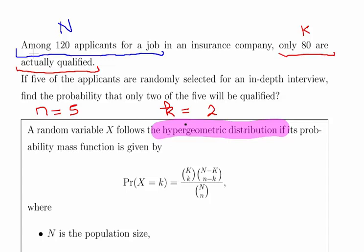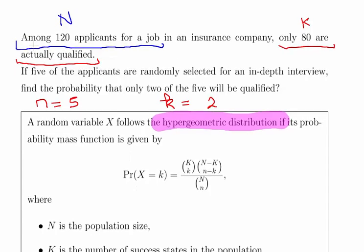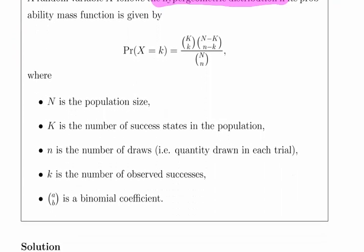This is the formula that we will be working with. These are our key values: N is the population size, K is the number of successes in the population, n is the number drawn in each trial, and x is the observed number of successes. We have the binomial coefficient there as well. We're looking for the probability of X equals 2.